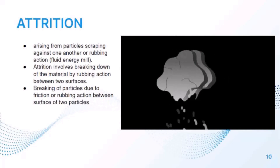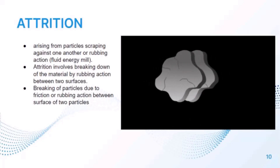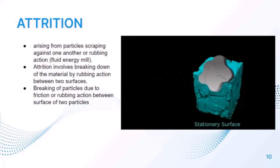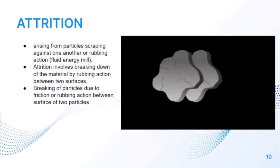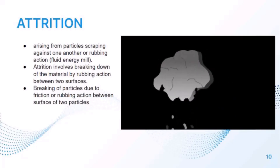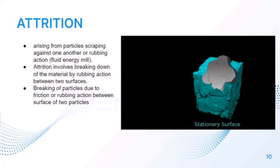The last type of mechanism is attrition, which arises from particles scraping against one another in a rubbing action, or in a fluid energy mill. Attrition involves breaking down of material by rubbing action between two forces — for example, surface phenomena — and is generally necessary for fine grinding. There are two types: a particle being rubbed on a stationary surface, and two particles rubbing on each other.